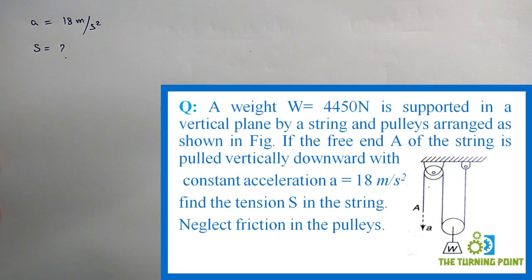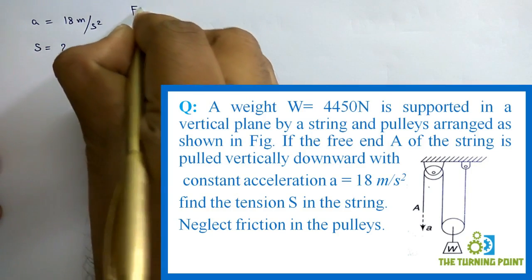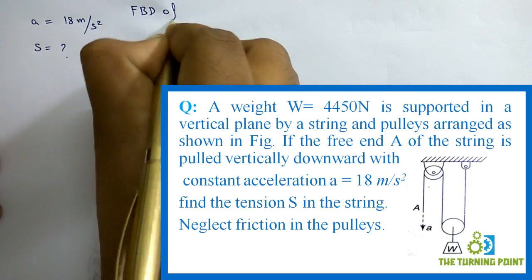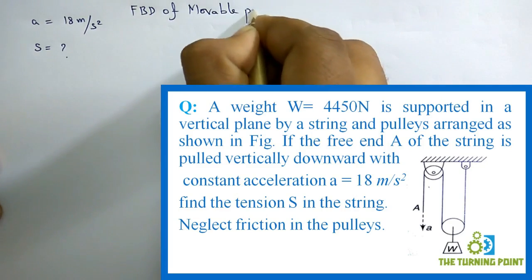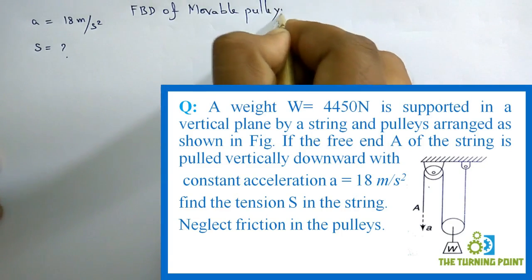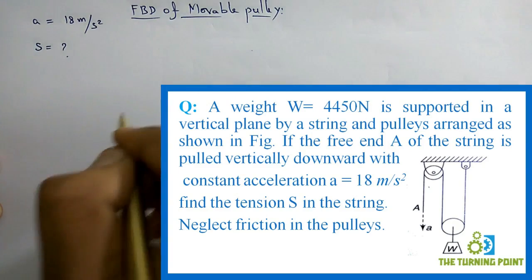First, let us consider the free body diagram of the mobile pulley. When we consider the free body diagram of mobile pulley, it is attached to two different ropes, right? You can observe that in the given question.